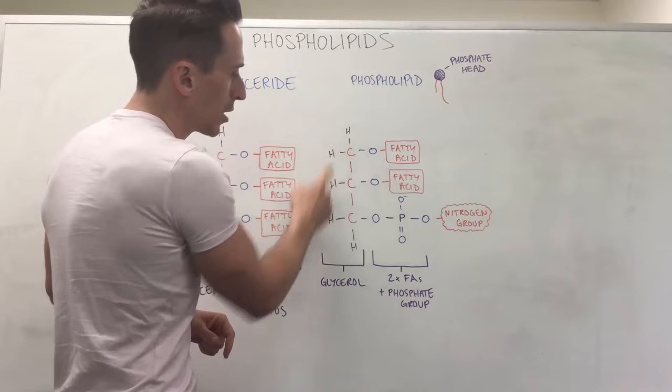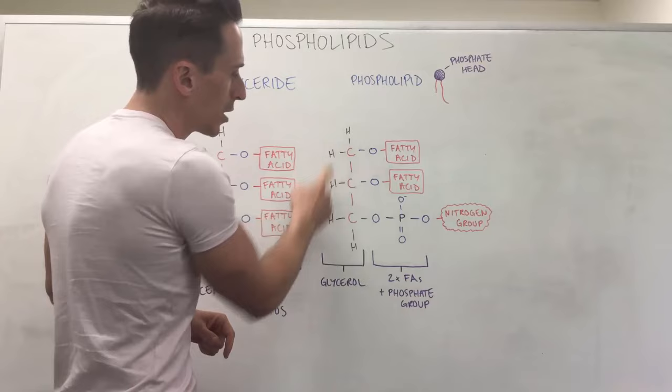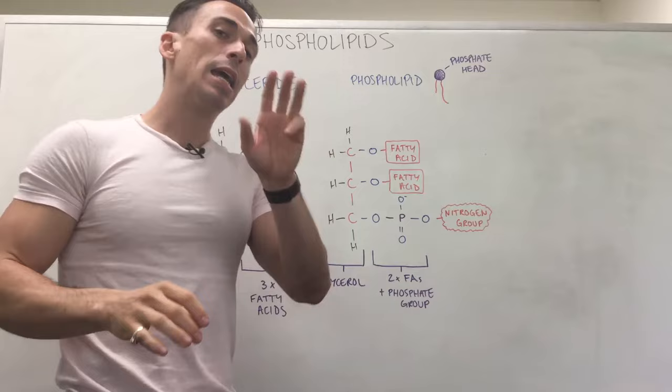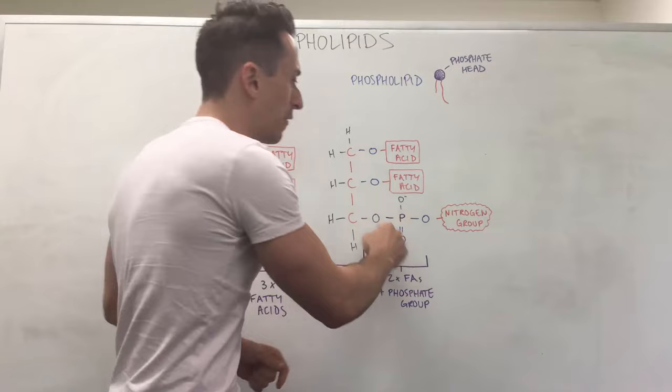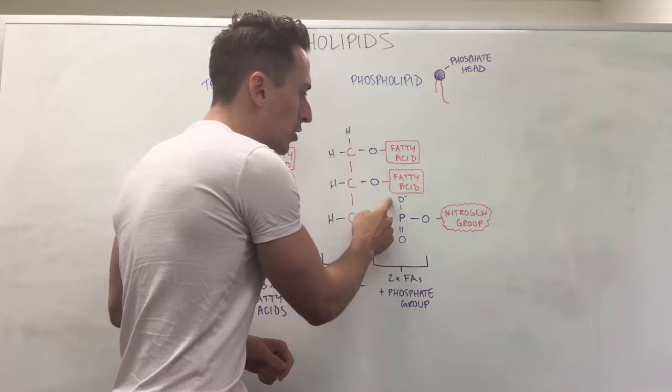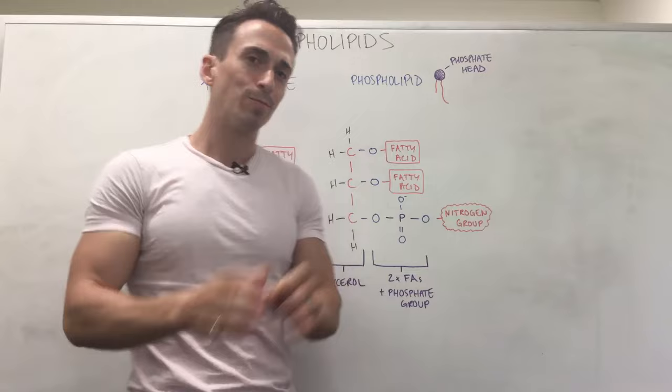Now let's look at the similarities first. There's a glycerol backbone. That's the same. So you can see the three carbons, the hydrogens and the oxygens, and it's still got two fatty acids attached to it. But in the position where the third fatty acid would attach in the triglyceride, what we have is a phosphate group attached in. And you can see that this phosphate group has a large amount of oxygens attached to it as well. And attached to that is a nitrogen group as well.